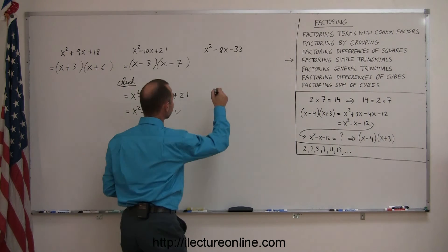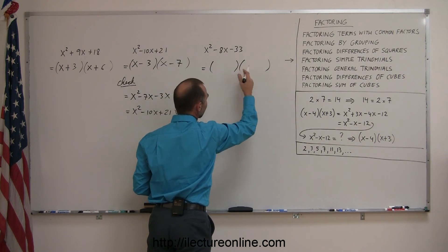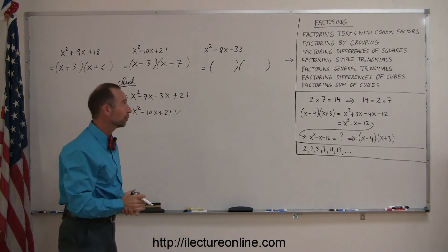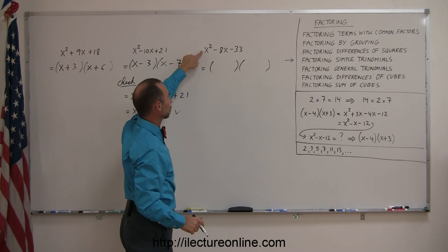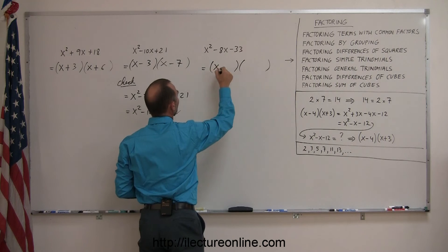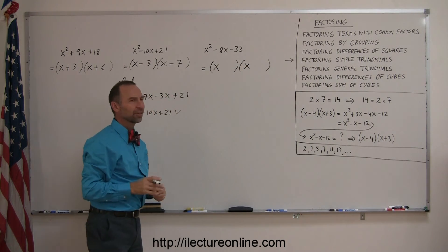Let's take a look at this last one. I know that the final factored form will be like that, the product of two binomials. Since the coefficient of the first term, the x squared term, is a 1, I can write an x there and an x there.